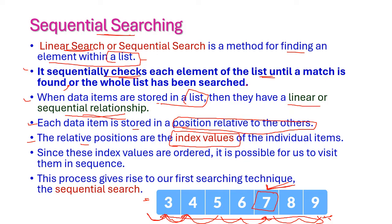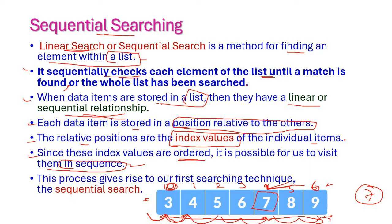When data items are stored in a list, they have a linear or sequential relationship. Each data item is stored in a position relative to others, and the relative positions are the index values of the individual data items. The index starts from 0 to 6 — totally we have 7 data items. These index values are ordered, and it is possible to visit them in sequence. That means all data items should be visited at least once, and this process gives rise to sequential searching.